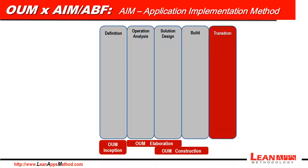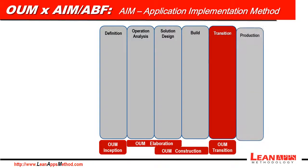The fifth phase is Transition, where we execute the cut-over plan and go live, and it's associated with the Transition phase at OUM as well. The sixth and last phase is Production, and the goal here is to monitor and confirm that the application is performing as expected, just like the Production phase at OUM.